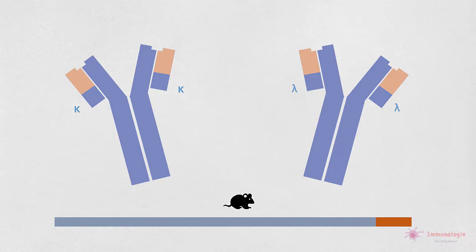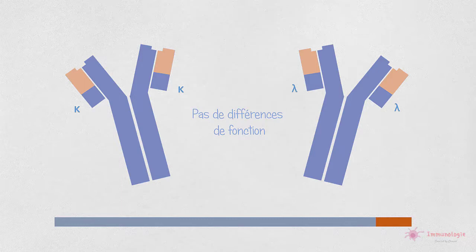Enfin, contrairement aux isotypes de chaînes lourdes, il n'y a pas de différence de fonction connue entre les anticorps contenant kappa et les anticorps contenant lambda.